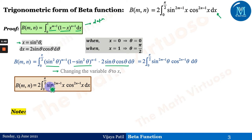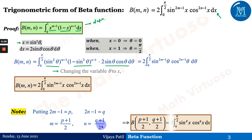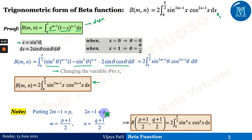This trigonometric form can be molded as required. Under a note: if we put 2m - 1 = p and 2n - 1 = q, then m = (p+1)/2 and n = (q+1)/2. The formula becomes beta((p+1)/2, (q+1)/2) = 2 ∫₀^(π/2) sin^p(x) cos^q(x) dx, which is useful depending on the requirement of the question.